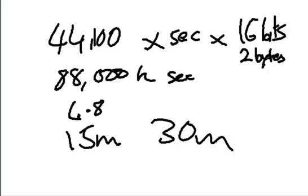So a 3-minute song typically will take 30 megabytes. That is why your typical CD is 70 minutes — because you can only get 700 megabytes of data on a CD. Now, with MP3 files — how much does a 3-minute song take as an MP3 file?